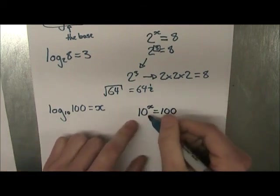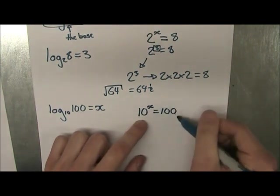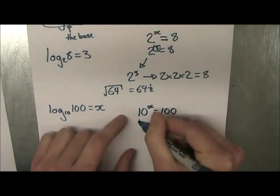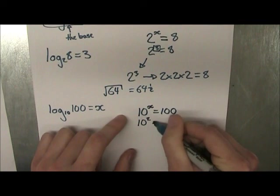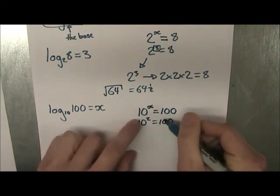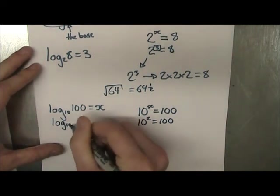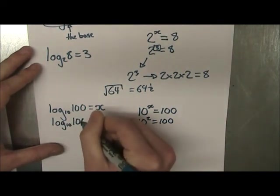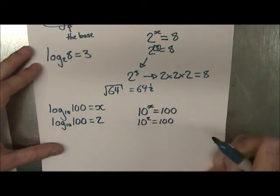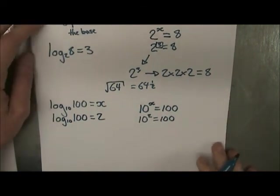So the base to the answer is equal to the argument. Okay? So 10 to the power of what gives us 100? Well, everyone knows that 10 squared is equal to 100. So we just found our x. So the solution to this, log base 10 of 100 is equal to 2. And there you go. That's all there is to it.